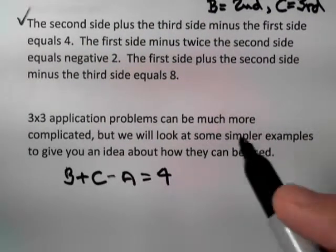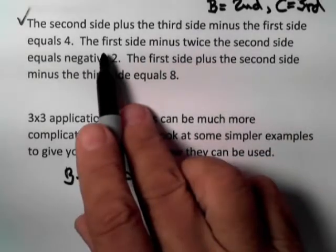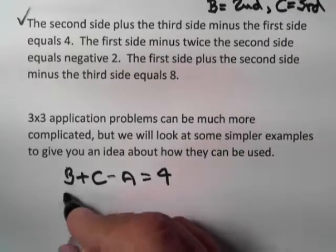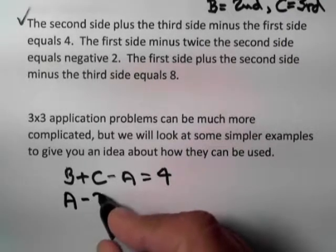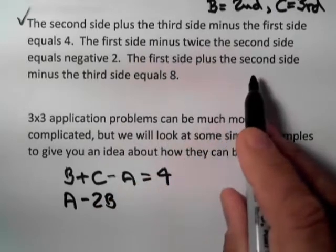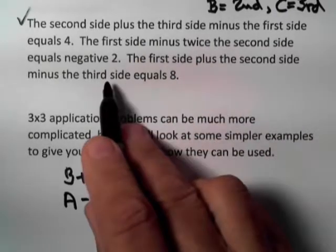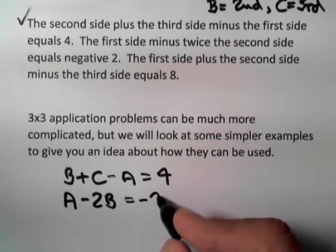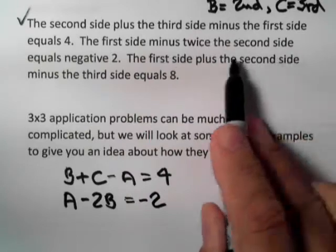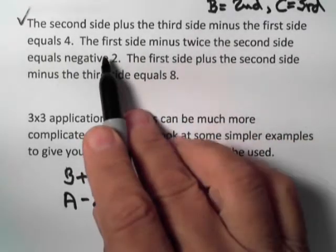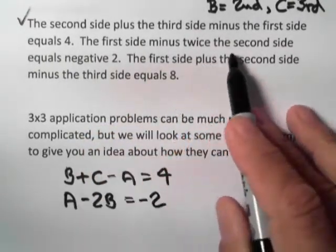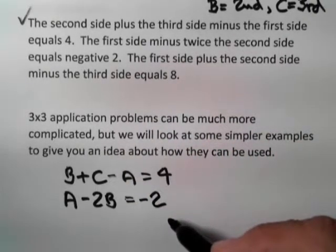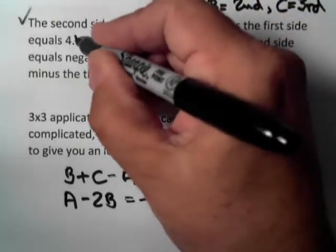Now continue on for the next sentence. It says the first side minus twice the second. The first side is A, minus twice the second would be minus 2B, equals negative two. Notice the third side wasn't mentioned here, so it's left out. Double-checking: A minus 2B equals negative two. We've got it exactly the way it was indicated.